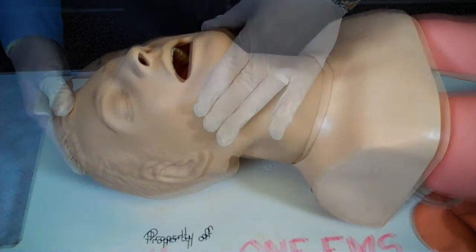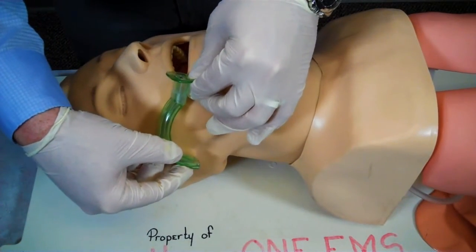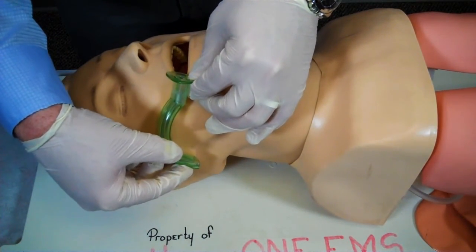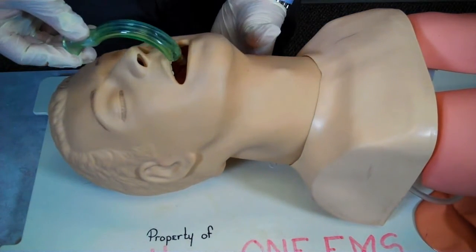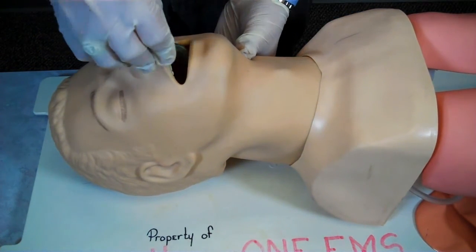I will measure the oropharyngeal airway from the corner of the mouth to the earlobe. I will insert the adjunct into the oropharynx in a manner that will not push the tongue back into the patient's airway.